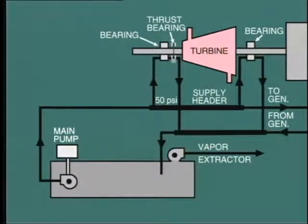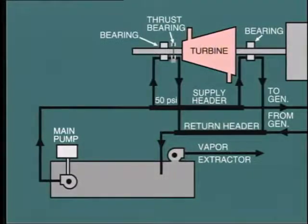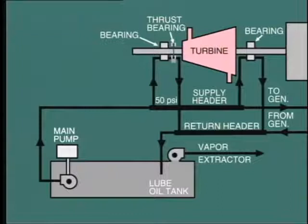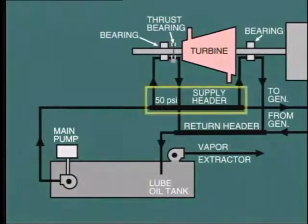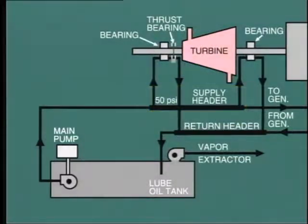After passing through the bearings, the oil flows into the return header, and from there to the lube oil tank. The lube oil is pumped from this tank in order to feed the supply header, so we have in effect a closed cycle.